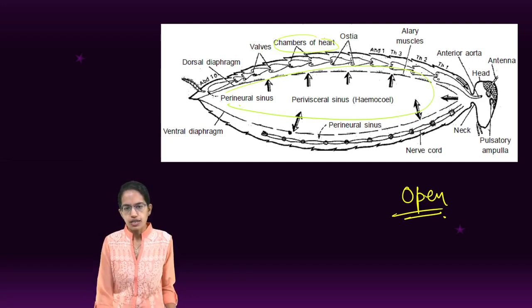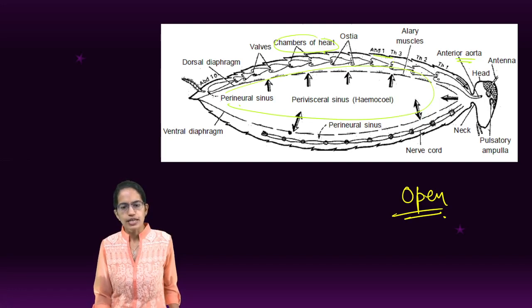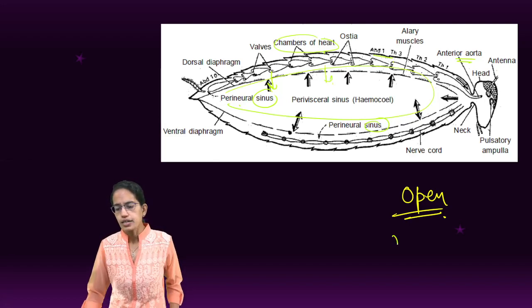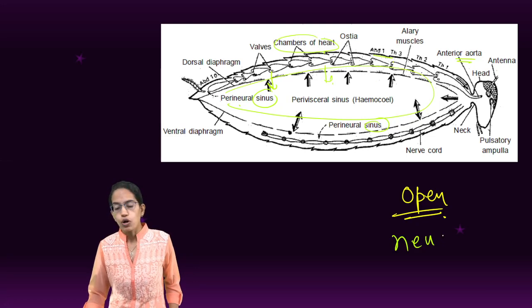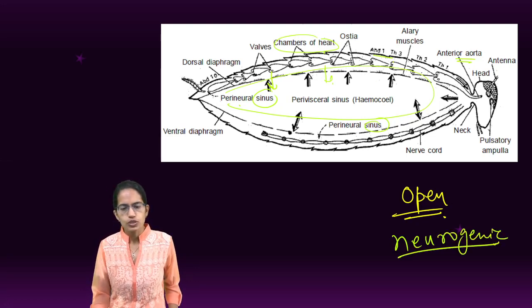There is the chambers of the heart as you can see and the aorta. There are blood spaces which are known as sinuses. Here are the blood spaces, the openings which are called as sinuses. This heart, in the case of cockroach, is known as neurogenic heart and this is enclosed in a pericardial sinus.